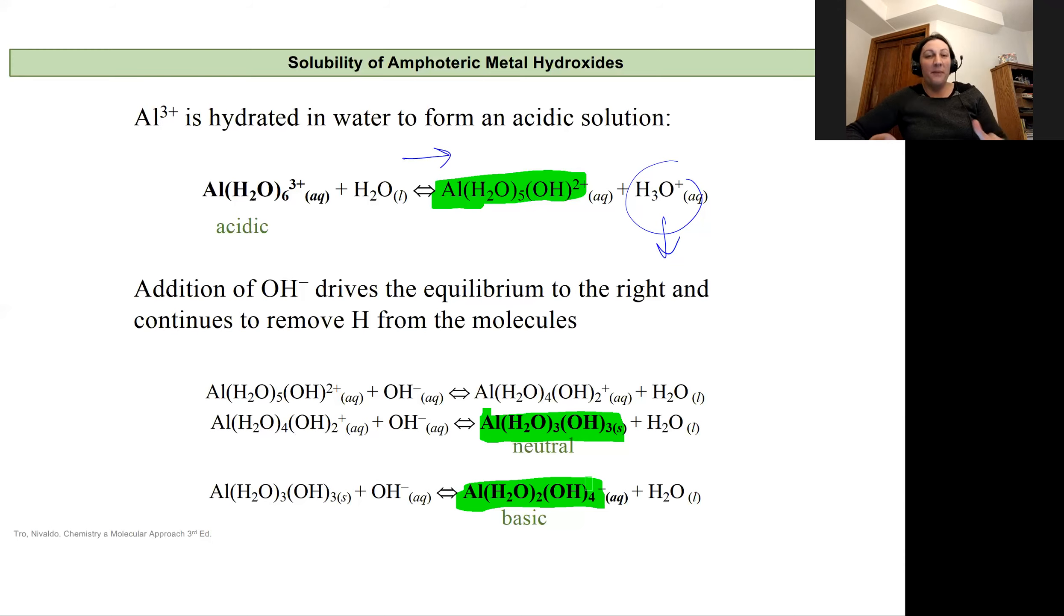Depending on the pH, this metal hydroxide, because it's amphoteric, is going to have different forms.